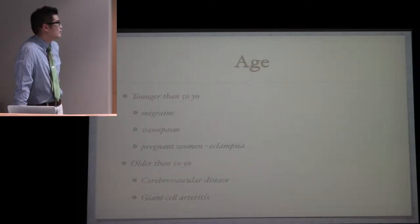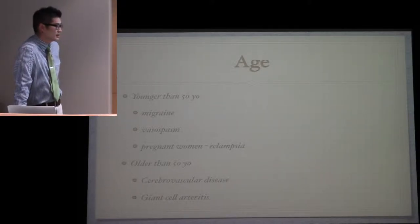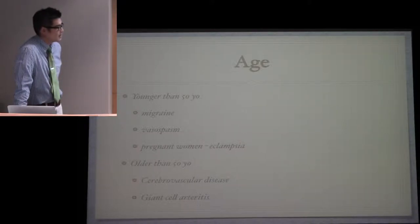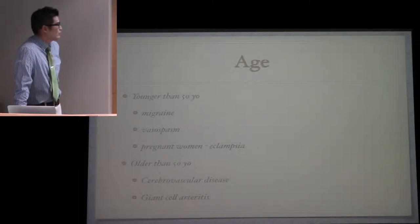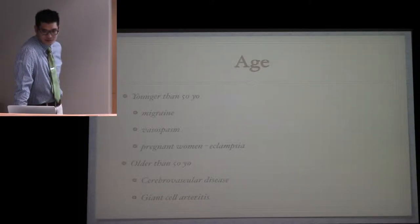Age is also important. If they're younger than 50 years old, think horses not zebras - migraine, vasospasm. However, in pregnant women, always consider eclampsia. This typically occurs around the time of delivery and is due to a more serious pathogenic cause, vasogenic edema of the occipital cortex. Older than 50, think about cerebrovascular disease or giant cell arteritis, typically if they're even older than 60.